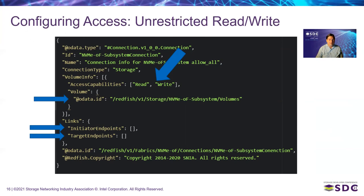For another example: if we want to restrict an NVMe over Fabrics subsystem and its volumes to read-only, and restrict it to only a small number of hosts — say host 2 and host 3 — and restrict access to a specific fabric path, you would have a file that looked like this. You'd specify read-only, specify which hosts are allowed to access this subsystem, and specify only on this fabric path. These are just examples; restrictions and orders of restrictions could be implementation-specific, but this illustrates how you would institute certain policies.